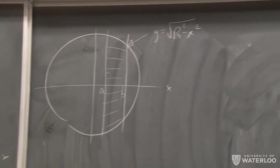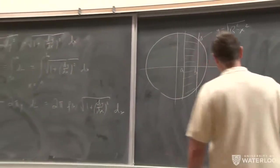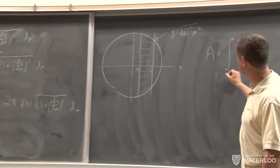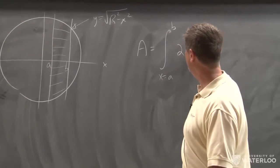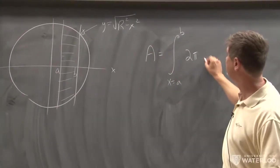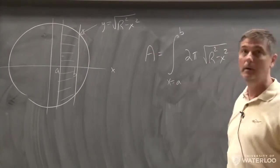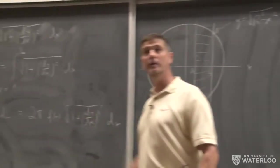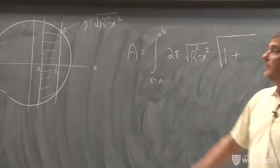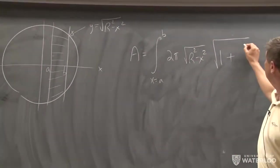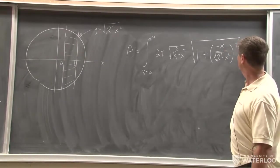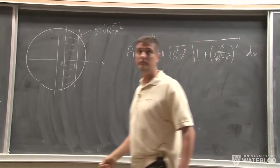You get it from the surface area formula: the integral with x from a to b of 2π times y, which is √(R² − x²), multiplied by dl. In this case dl is √(1 + (−x/√(R²−x²))²) dx.